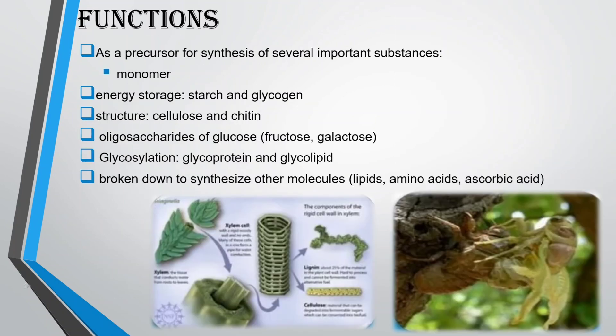Glucose serves as a precursor for the synthesis of several important substances: as a monomer for energy storage in starch and glycogen, and in structural roles in cellulose and chitin. Oligosaccharides of glucose, fructose, and galactose participate in N-glycosylation of glycoproteins and glycolipids. Glucose can also be broken down to synthesize other molecules such as lipids, amino acids, and ascorbic acid.